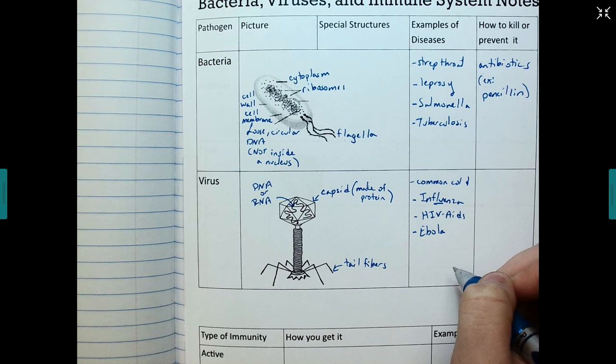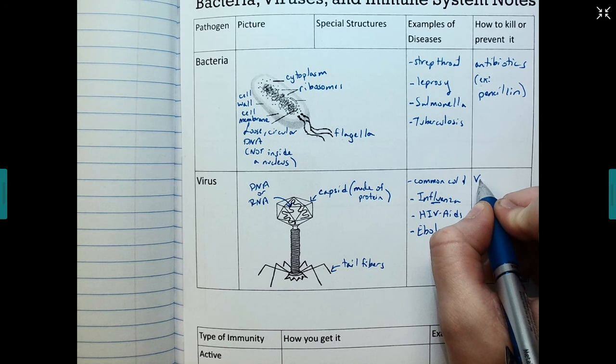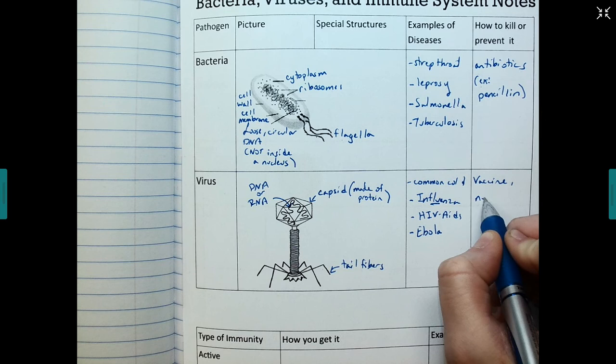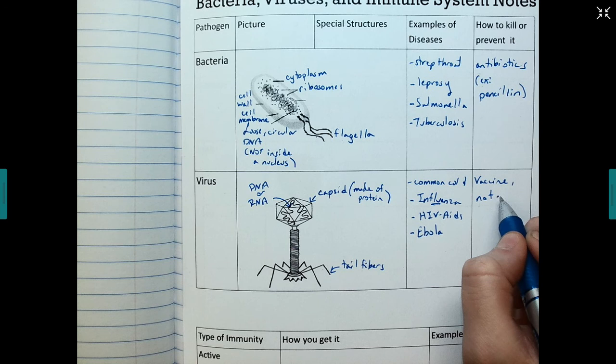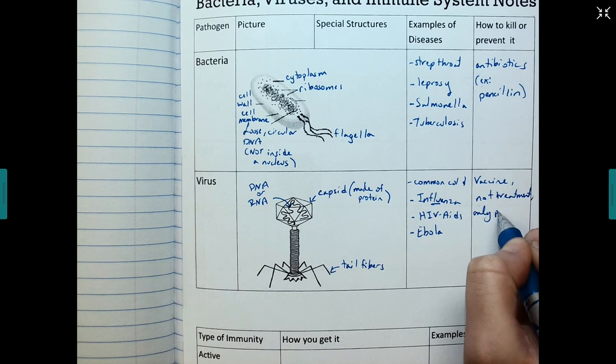The way to treat viral infections, there's really only one thing we can do, and that is a vaccine. Vaccines, they're really for prevention, not treatment. So we'll say not treatment, only prevention.